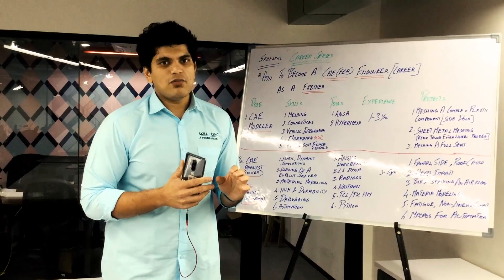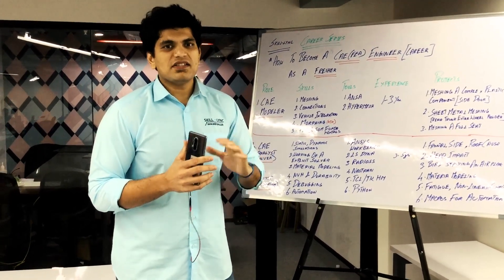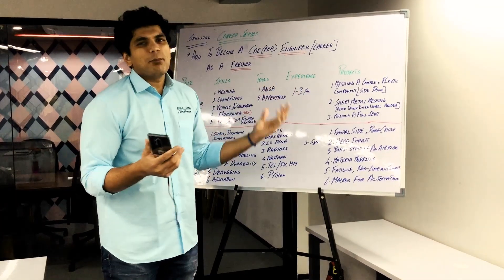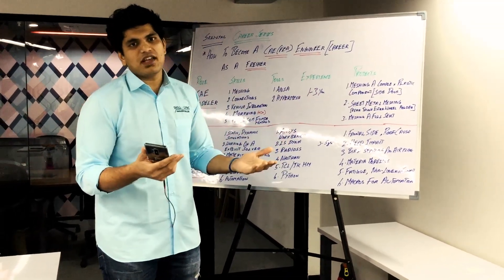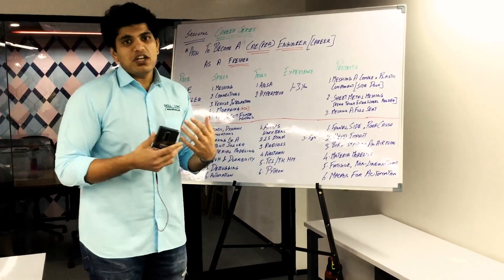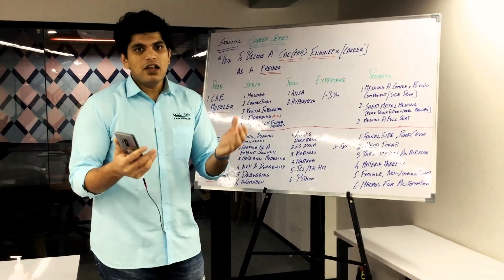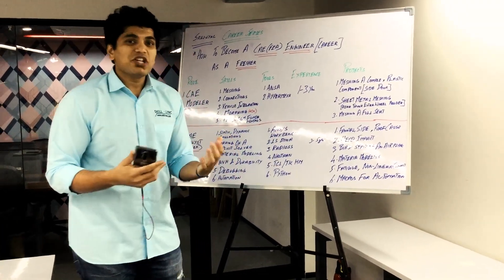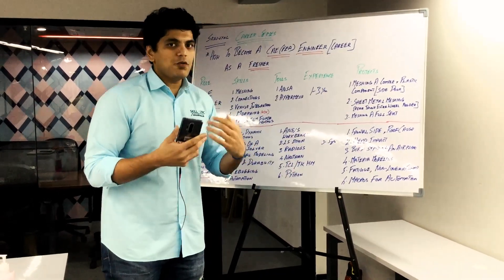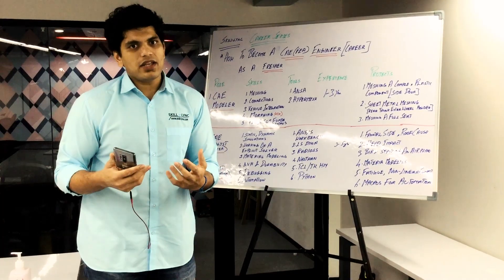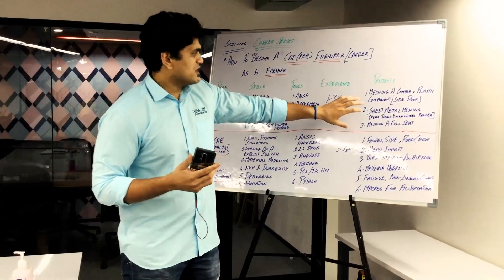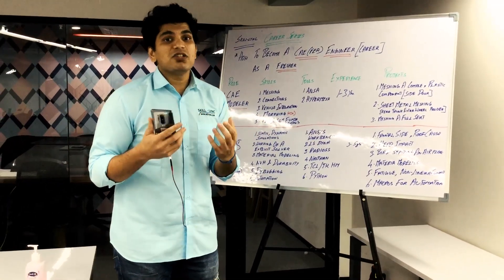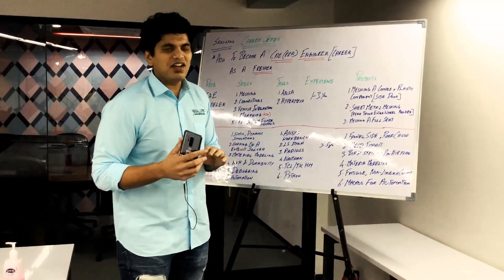To get into CAE modeler roles, you typically need around one year of experience with these tools, working on multiple projects. The projects you should work on include meshing a complex plastic component — like the inner panel of a car door — and a sheet metal component, such as a steering wheel mounting or a rear trunk spare wheel holder, or meshing a full vehicle seat. Working on these types of projects will significantly improve your chances of doing well in interviews and tool tests. If you don't have work experience, you need engineering project experience where you work on these kinds of projects.